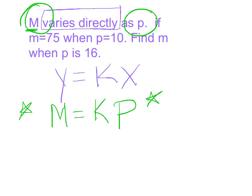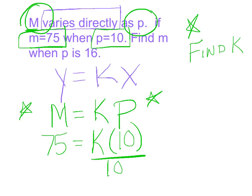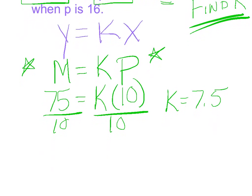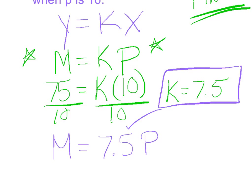The first thing we want to do is find K, that constant of proportionality. I'm just going to plug in the numbers they give me. They say if M equals 75 and P equals 10, so I replace my P with 10. My goal is to solve for K — I simply divide over the 10, and I get K equals 7.5. Now I'm not done with the problem. My goal is eventually to find M, but I first find K. Now that I know K, I'm going to substitute it into my formula: M equals 7.5P.